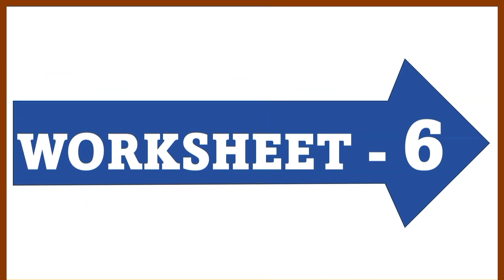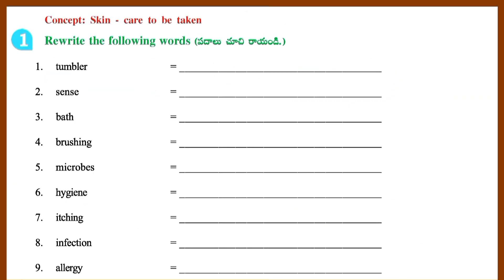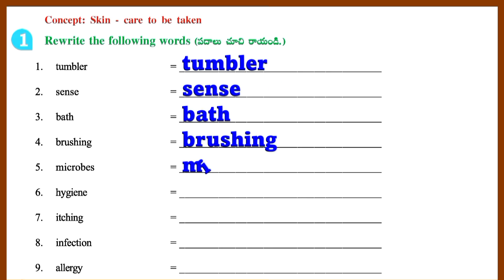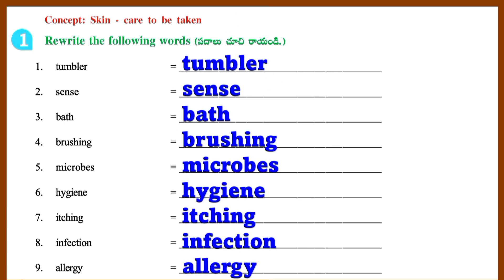Worksheet 6 Concept. Section 1: Rewrite the following words — Tumbler, Sense, Bath, Brushing, Microbes, Hygiene, Itching, Infection, Allergy.